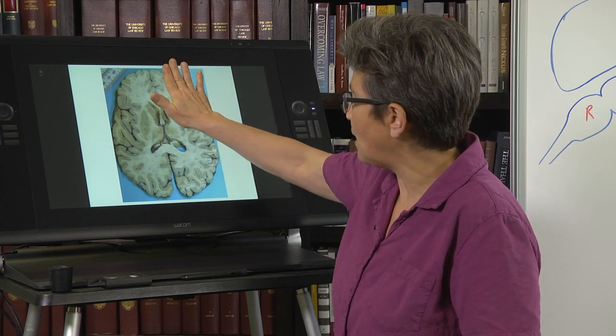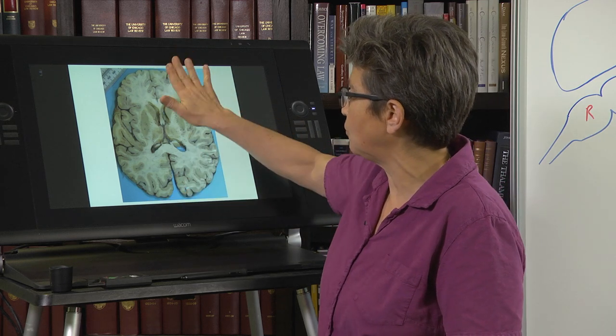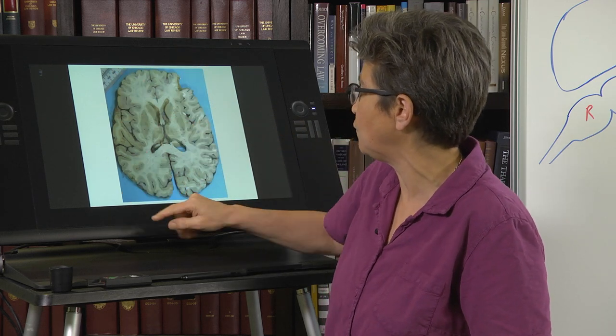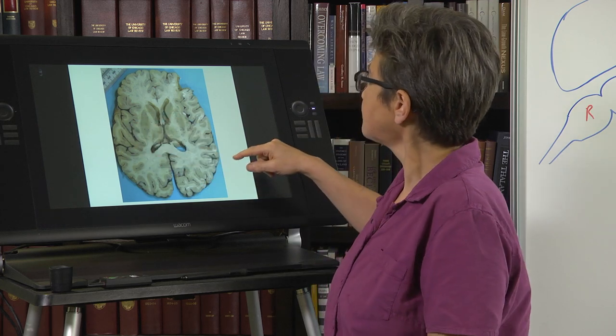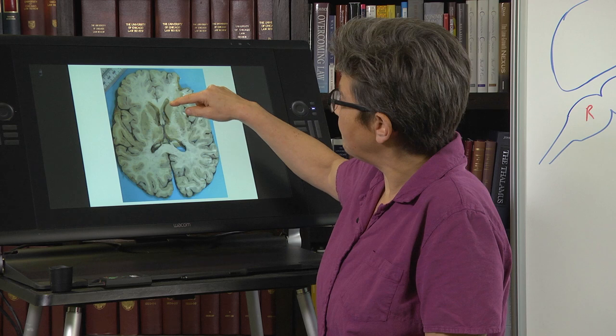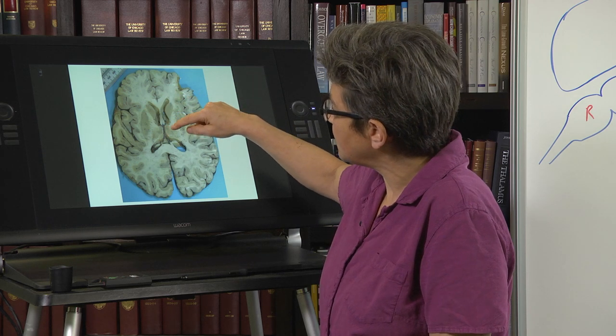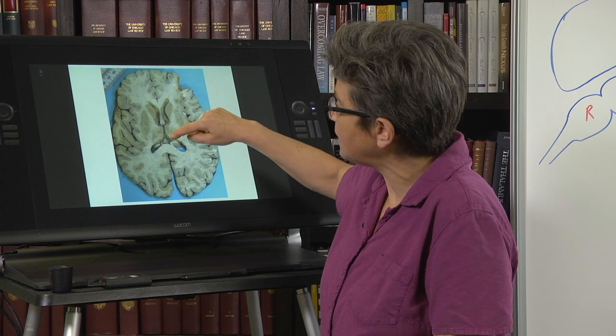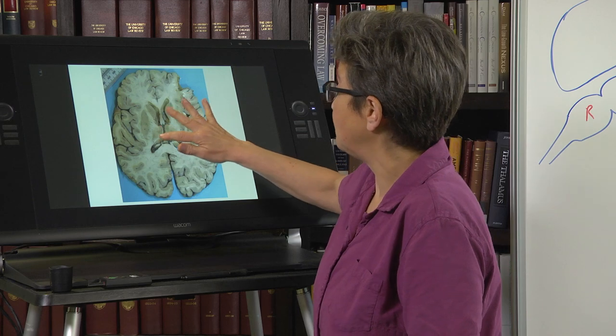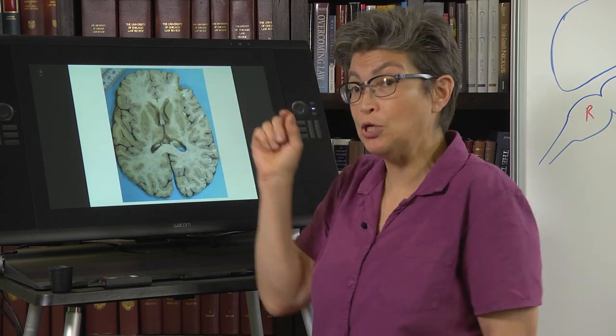So here we have the right hemisphere. This is the back. This is the front. The right hemisphere, the left hemisphere, you can see this is the temporal lobe out here. This piece right here, this is the third ventricle. And so the thing that's next to the third ventricle is the thalamus. This is thalamus.